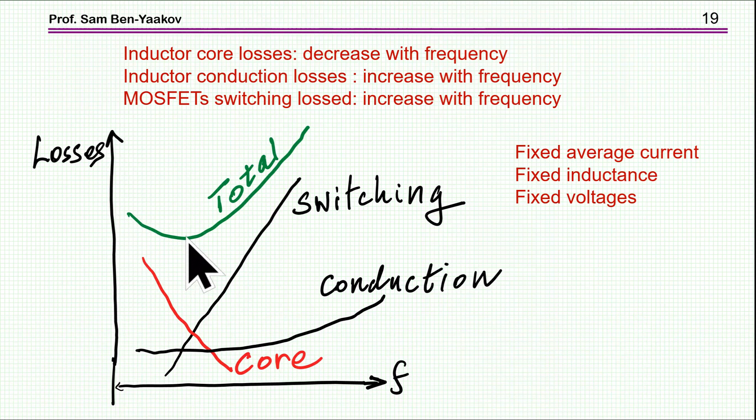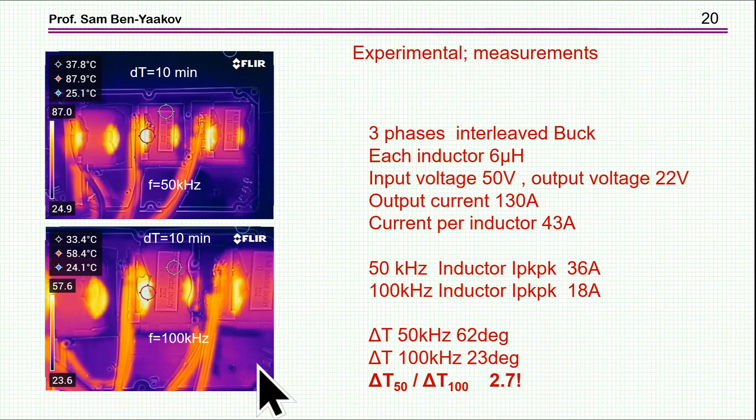But this is for a fixed inductor. We are changing just the frequency, the same current average current. So we see a reduction in the losses, and then obviously at very high frequency they start shooting up.